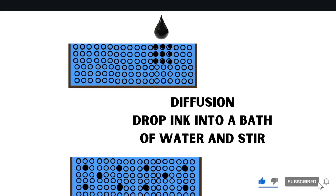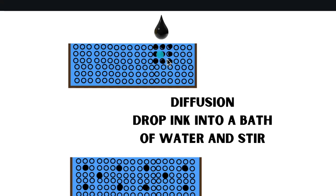We're going to talk about diffusion because it will become pertinent later on in the video. If you've got a bath with molecules of water in it and you drop in some ink, initially you will have a high concentration of ink molecules in one area and it will look very dark. But if you slightly stir the water, you get diffusion — as the ink molecules spread out the concentration in that area decreases and spreads throughout the whole bath of water.